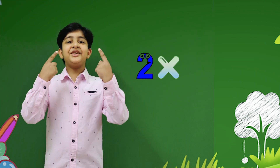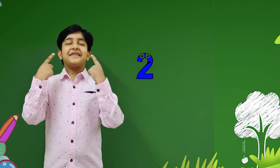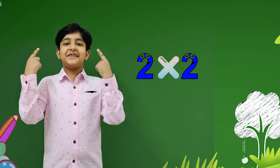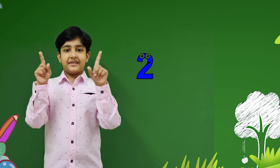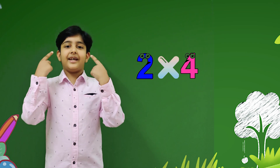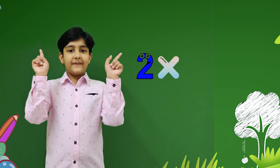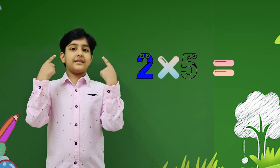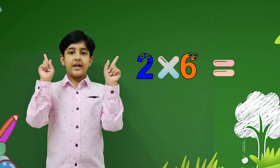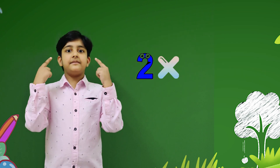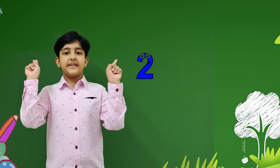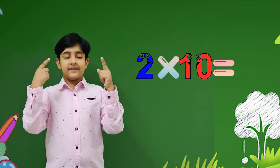2 ones are 2, 2 twos are 4, 2 threes are 6, 2 fours are 8, 2 fives are 10, 2 sixes are 12, 2 sevens are 14, 2 eights are 16, 2 nines are 18, 2 tens are 20.